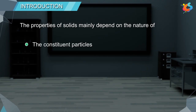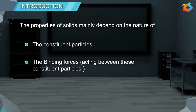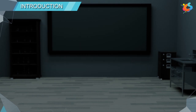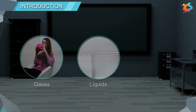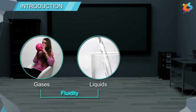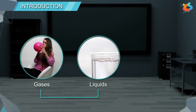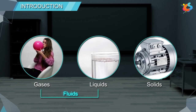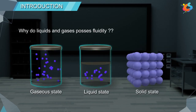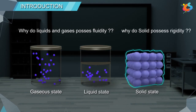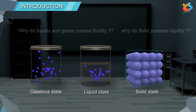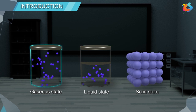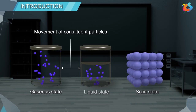The properties of solids mainly depend on the nature of the constituent particles and the binding force acting between these constituent particles. The most important characteristic property of gases and liquids is fluidity — it means that gases and liquids have the ability to flow and are called fluids. Whereas solids do not possess fluidity; instead, they possess rigidity.